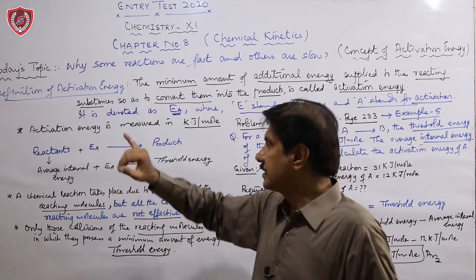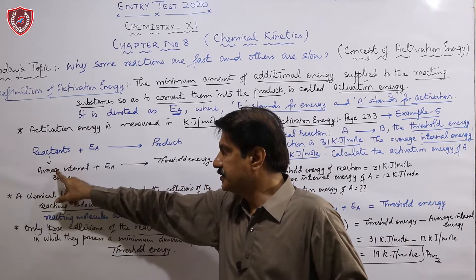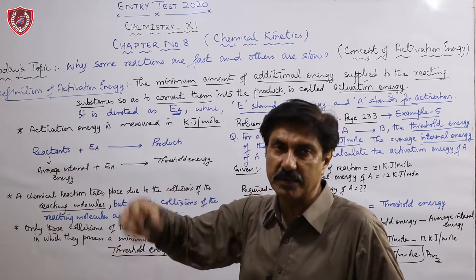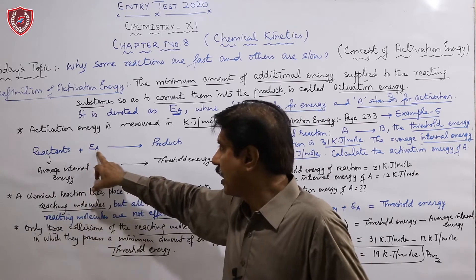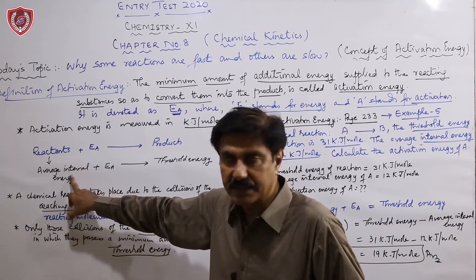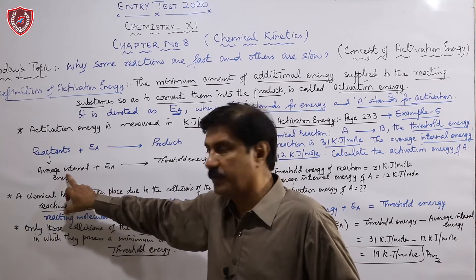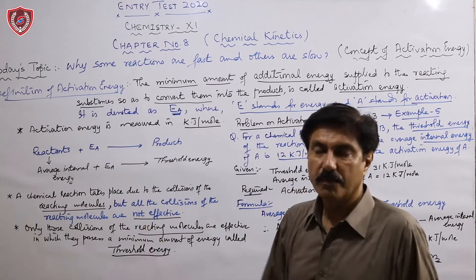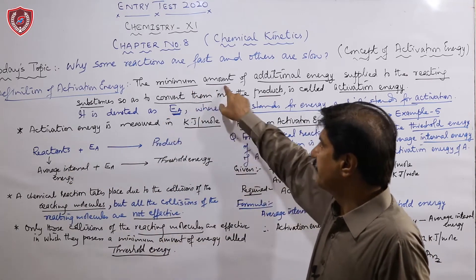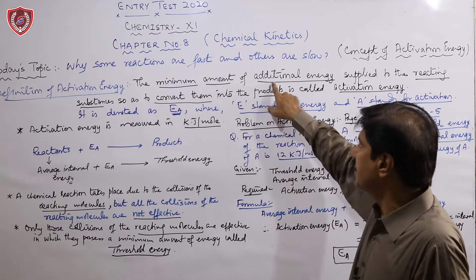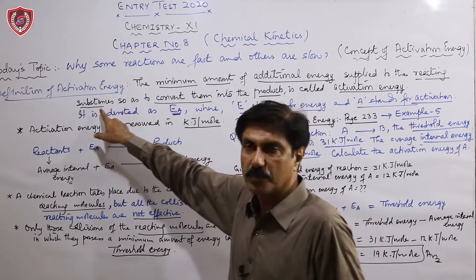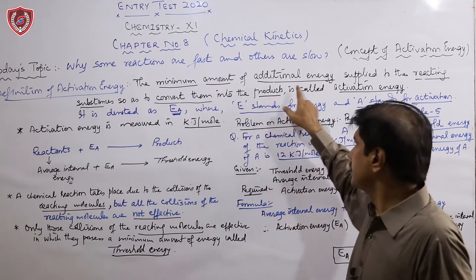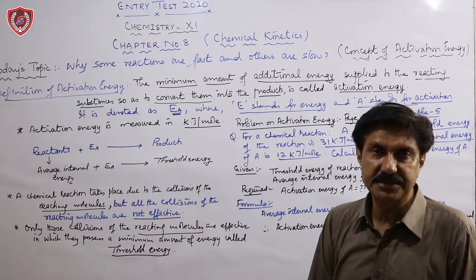In mathematical form: every reactant has its own specific average internal energy. You provide activation energy in the form of heat to the reactants. These two energies combine, and the energy reaches that level — so your reactants convert into products. The simple definition: activation energy is the minimum additional amount of energy supplied to reacting molecules so that those reactants can be converted into products and the reaction is completed.